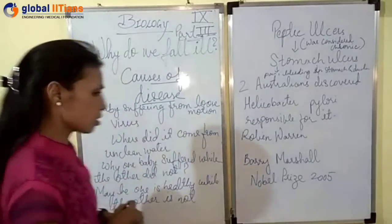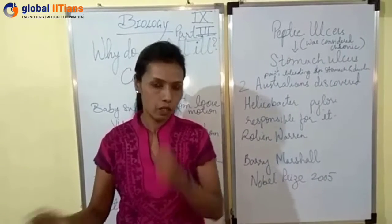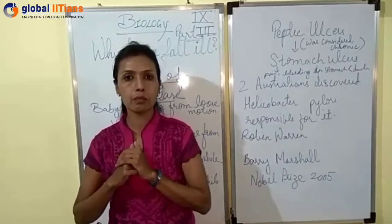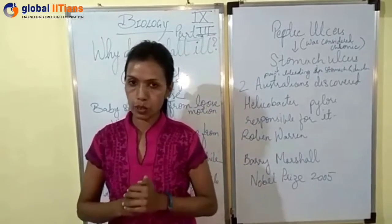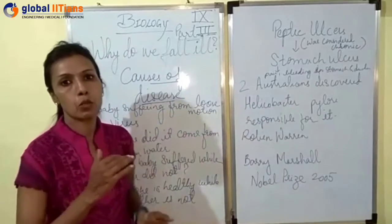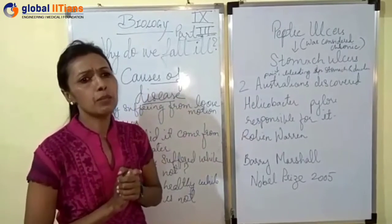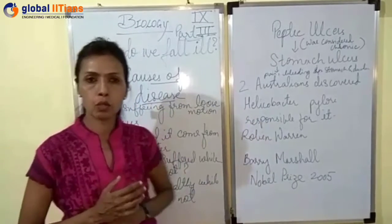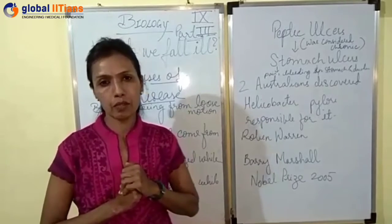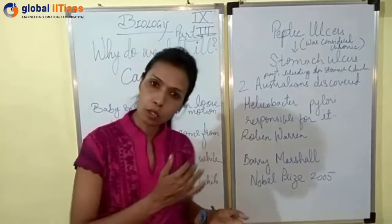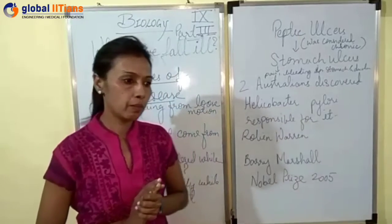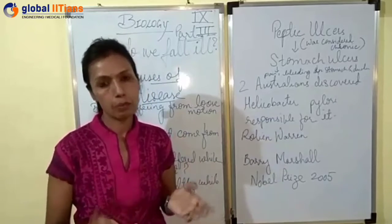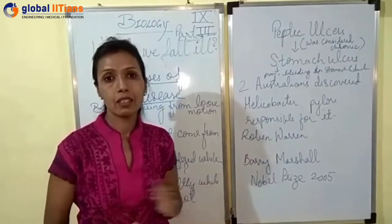Why is the other baby not suffering? Because the other baby is healthy. If the other baby is healthy, why is the first baby not healthy? Why is the baby suffering from loose motion? Again multiple causes — maybe the baby is poorly fed, malnourished, not getting proper nutrition. This can be one of the causes. So why then poor nutrition, why malnutrition in that baby? Again the causes would be because the baby is from a poor family, there is not enough food, no proper meal.